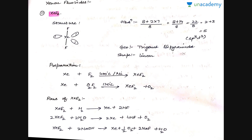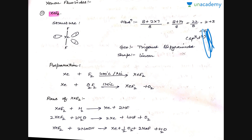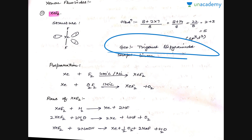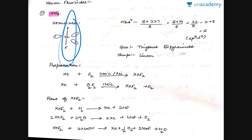The first important fluoride of xenon is xenon difluoride, XeF₂. As far as its structure is concerned, it has sp³d hybridization with 5 electron pairs, corresponding to a trigonal bipyramidal geometry. Since geometry includes both lone pairs and bond pairs, it has a trigonal bipyramidal geometry but a linear shape. XeF₂ has two bond pairs and three lone pairs of electrons.